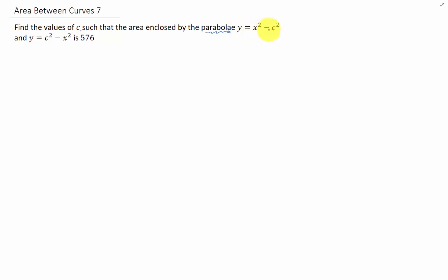Y equals X squared minus C squared, and Y equals C squared minus X squared. Make sure that area is 576, and we're finding the C values that are gonna make that happen.